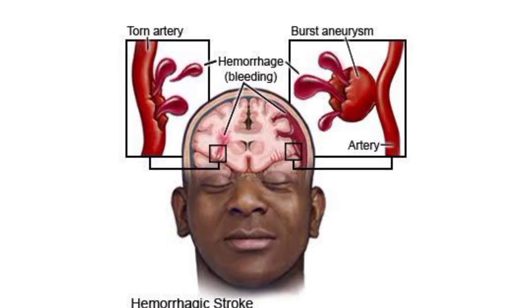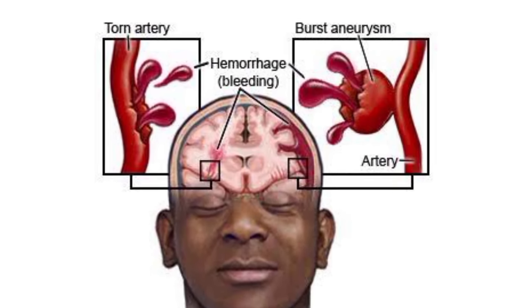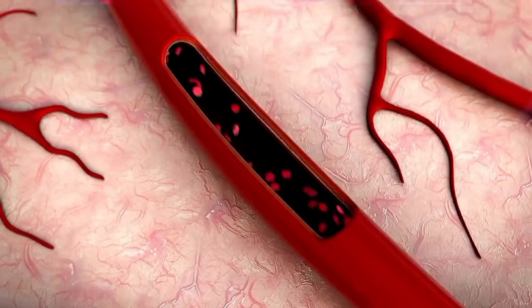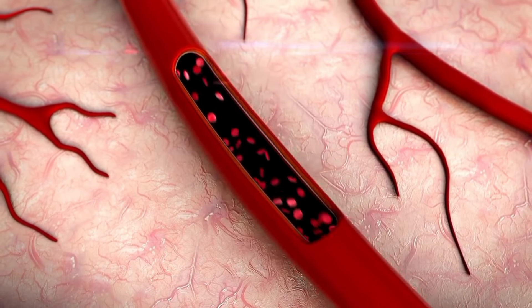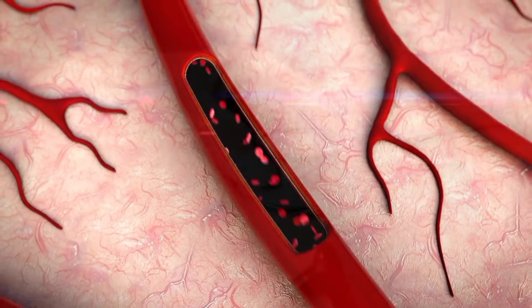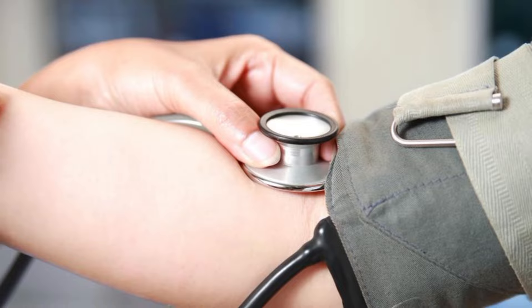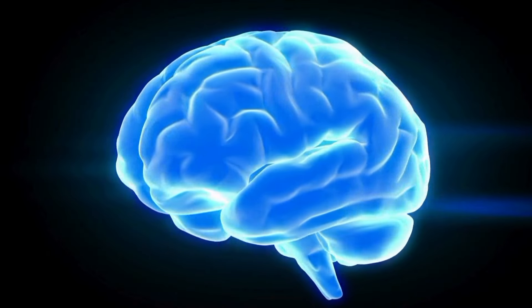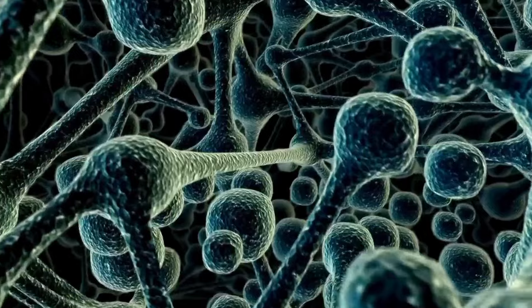On the other hand, hemorrhagic strokes result from the rupture of a blood vessel within the brain, leading to bleeding into the surrounding tissue. This can occur due to conditions such as high blood pressure, aneurysms, arteriovenous malformations (AVMs), or trauma. Let's dive in.